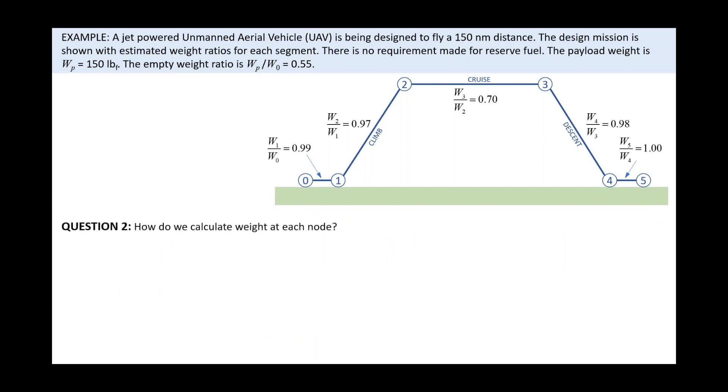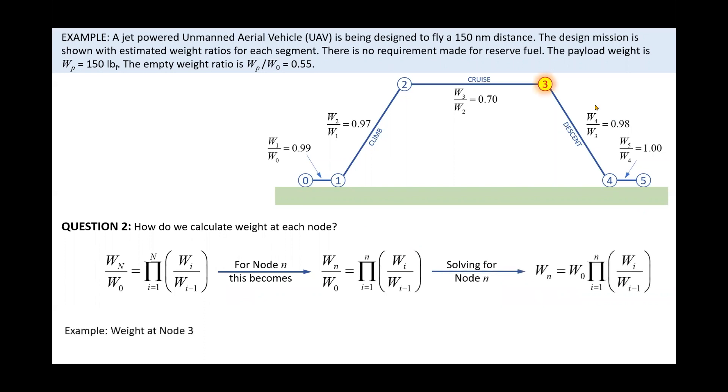The second question is, how do we calculate the weight at each node? We start with the weight ratio at end of mission, W sub n divided by W naught. Let's designate the node of interest using a lower case n. Thus, for node n, this becomes… Then we solve for W sub n, as shown here. As an example, consider we want to determine the weight of the aircraft at end of cruise, node 3. This requires the gross weight to be multiplied by the chain of weight ratios up to and including node 3.